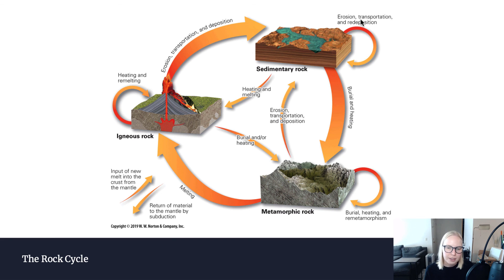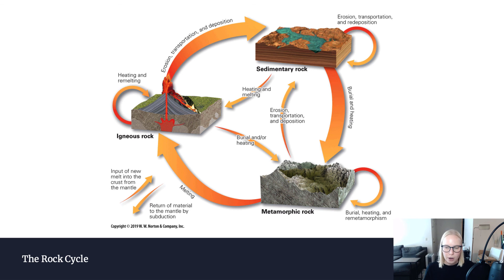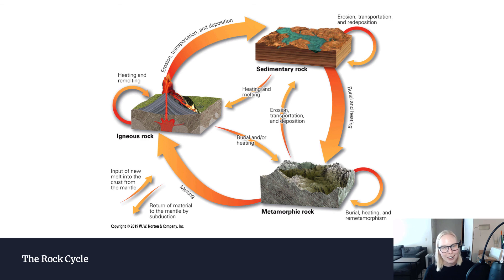This is a really excellent diagram because it truly encapsulates all of the options in the rock cycle and doesn't falsely illustrate it as just one unidirectional cycle. I hope that this video was helpful in giving you an overview of what rocks are, the three main types of rocks, and how they relate to one another. Just keep in mind that rocks can always be recycled and turned into something new. I hope this was helpful and I'll see you in the next video.